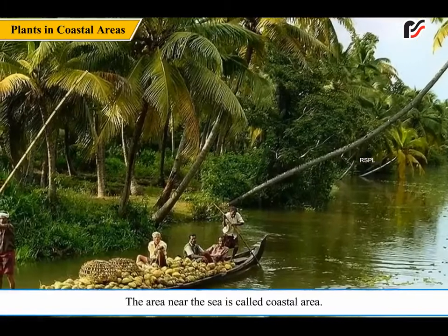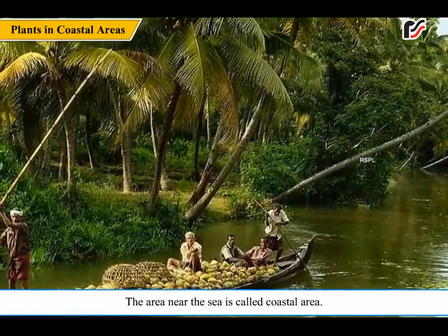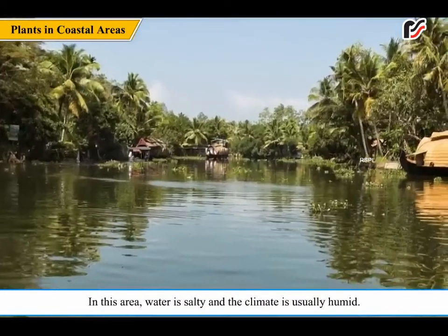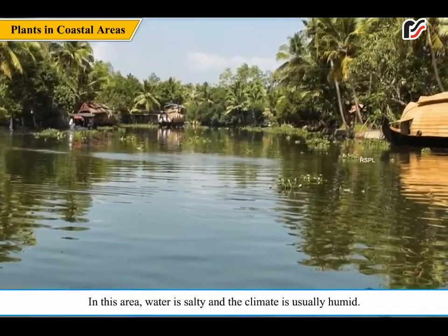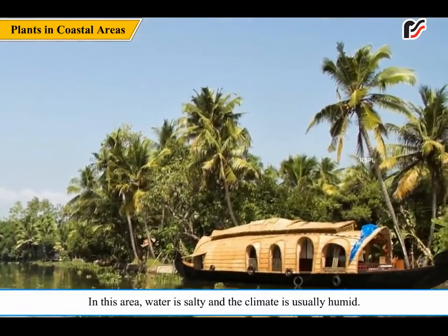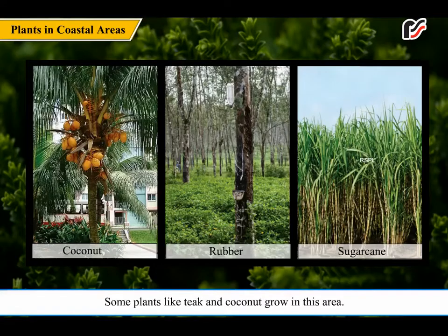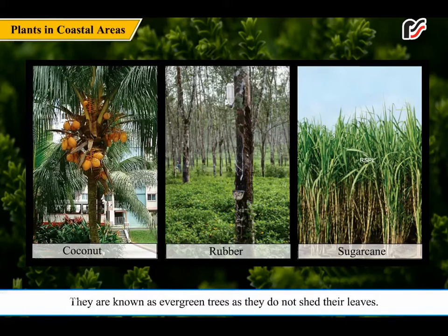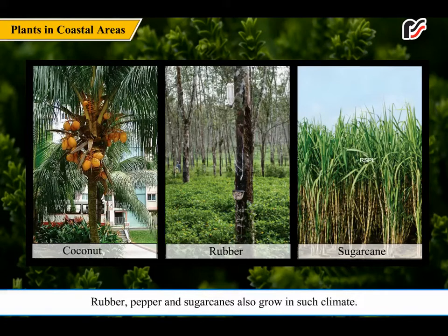The area near the sea is called the coastal area. In this area, water is salty and the climate is usually humid. Some plants like teak and coconut grow in this area. They are known as evergreen trees as they do not shed their leaves. Rubber, pepper, and sugar cane also grow in such a climate.